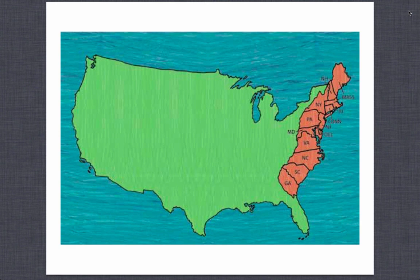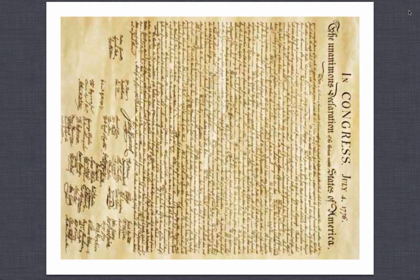This is a picture of the original 13 colonies. Why did people such as the Pilgrims choose to leave England and start a new life in North America? This is the Declaration of Independence. Why did the colonists decide to declare independence from England?